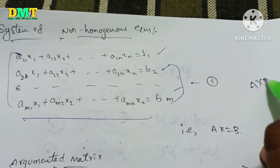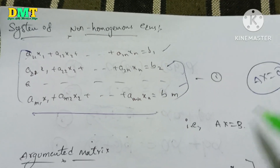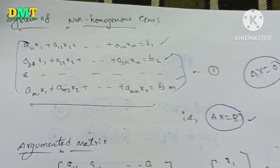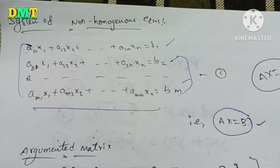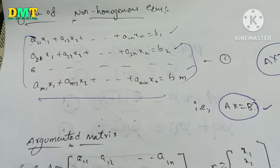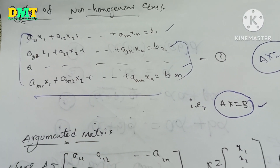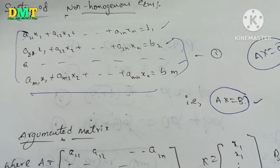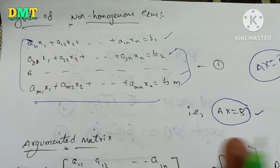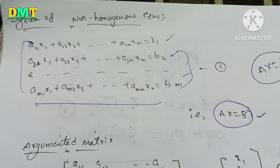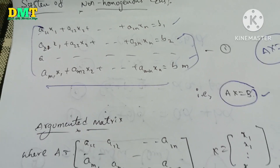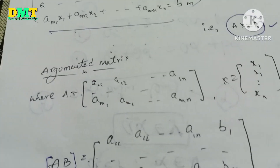We have AX is equal to zero for homogeneous equations, and AX is equal to b for non-homogeneous equations. This is one key condition. Now, let's start with the augmented matrix. The condition AX equals b leads us to the augmented matrix [A|b].